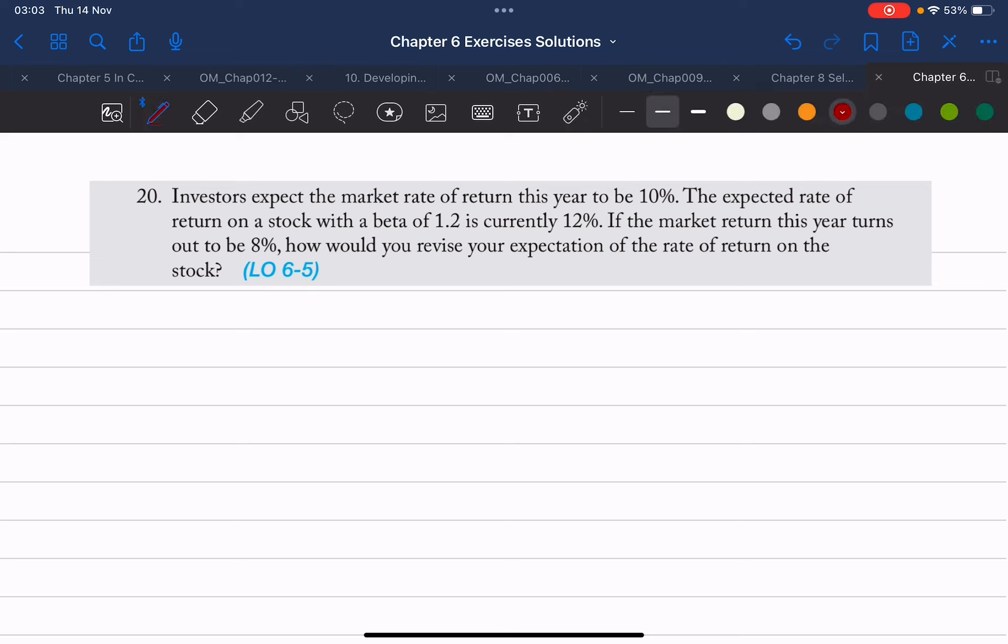So let's tackle that. We could say the expected rate of return on the stock will change by beta times the unanticipated change in the market return.